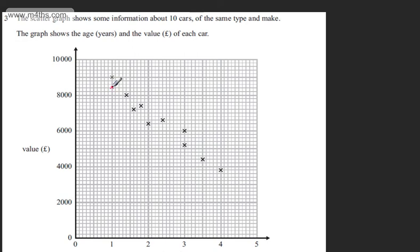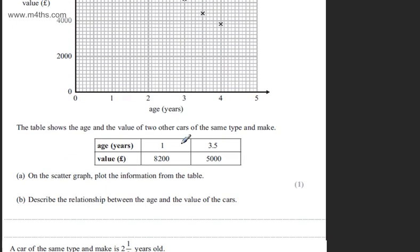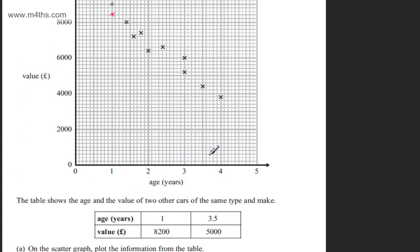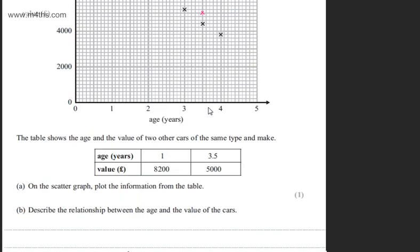All I'm doing is drawing a little cross at coordinates 1, 8,200. The next one is three and a half years old and worth 5,000. Let's locate that—it's just there. We've plotted those two points for one mark.